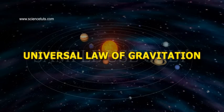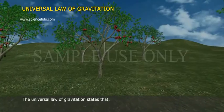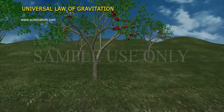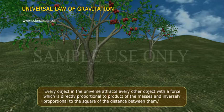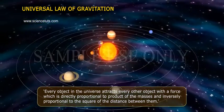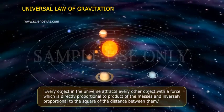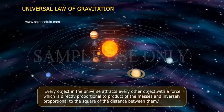Universal Law of Gravitation. The Universal Law of Gravitation states that every object in the universe attracts every other object with a force that is directly proportional to the product of the masses and inversely proportional to the square of the distance between them.